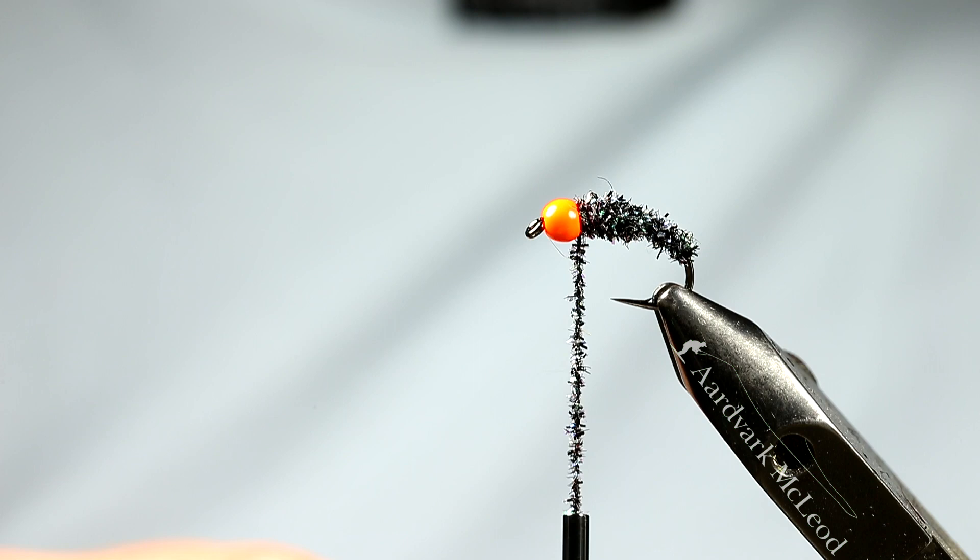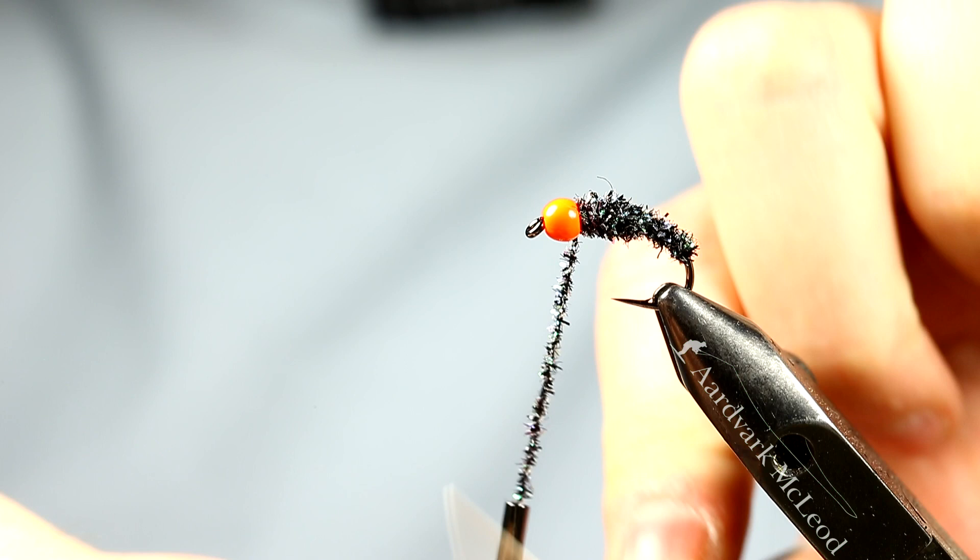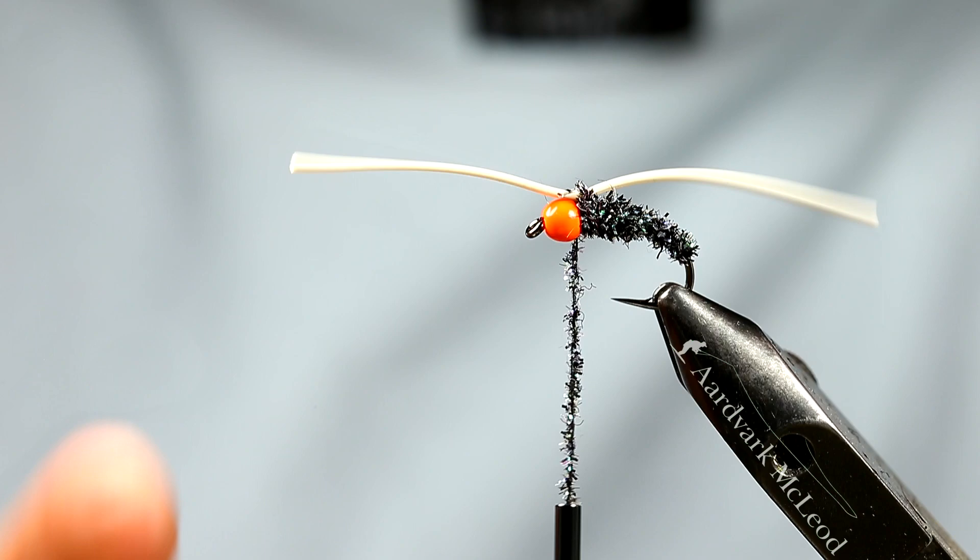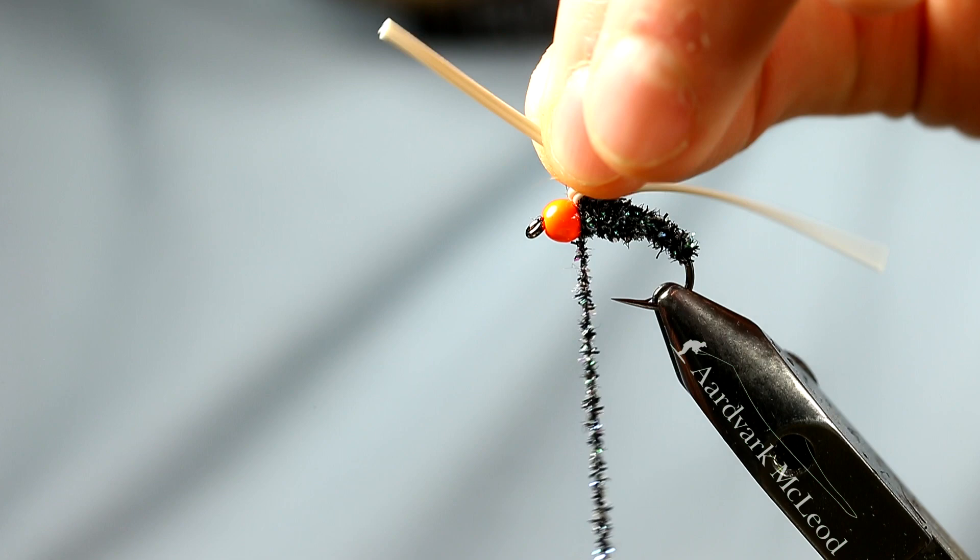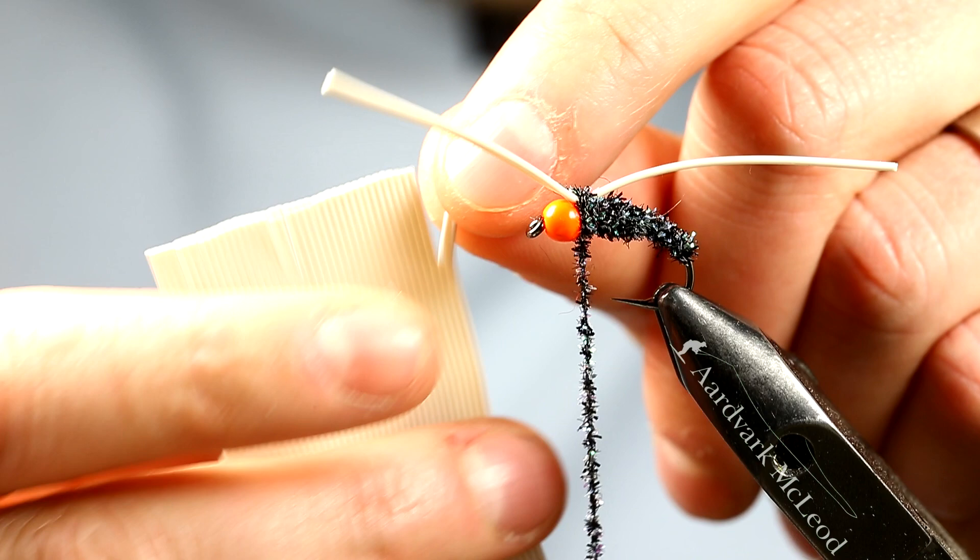Now come the rubber legs, really simple. Take them behind your thread up and over, that just catches the rubber legs in. Take one turn, two turns, just like that. And what I've done here, this is a little cheat for you. Tie them in before, they come in big strands like this. So what you do is you just peel off two, just hold them together. Don't actually split them at that stage.